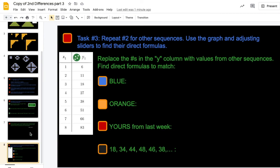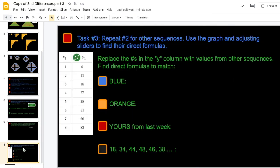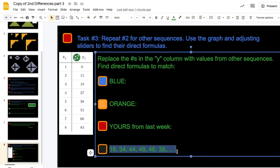Okay? You should have, by the end, you'll have five formulas. One for the green sequence, blue, orange, the sequence you made up last week, or you can make one up this week, and this guy here. This one's going to be a little different from all the other ones, but you'll see how that works when you put those numbers in.